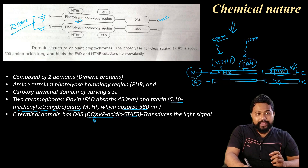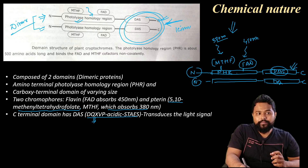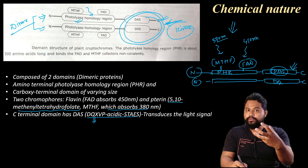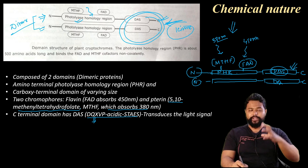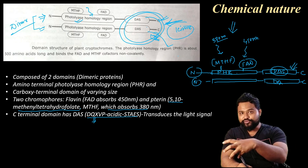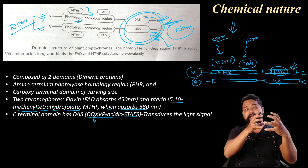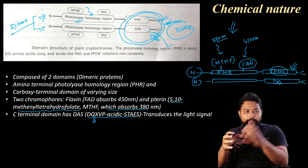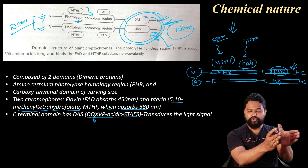When blue light is absorbed, a conformational change occurs and a signal is passed. This results in kinase activity and phosphorylation — a phosphorylation reaction occurs. The chemical structure changes through phosphorylation, and this signal is transduced to the nucleus.